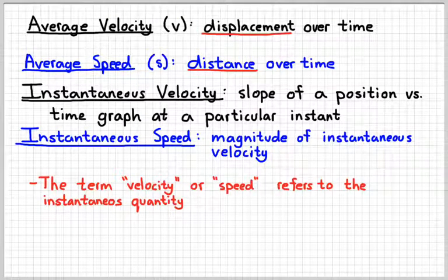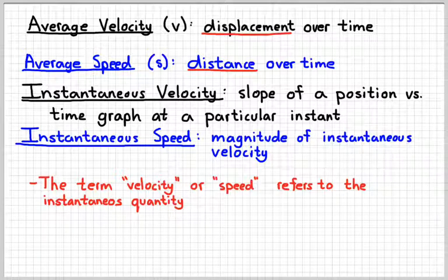So, real quick review. The average velocity is defined as displacement over time. Average speed is defined as distance over time. Instantaneous velocity is the slope of a position-time graph at any particular instant — displacement over time with the time made really small. And instantaneous speed is just the magnitude of that value. Remember that if we just say velocity or speed, we're referring to the instantaneous quantity.